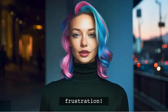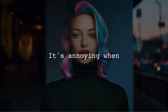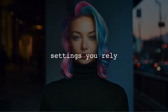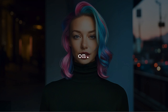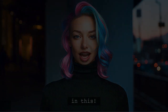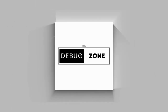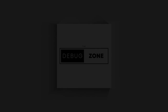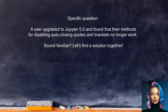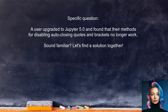I completely understand your frustration. It can be really annoying when software updates change settings that you rely on. You're not the only one dealing with this issue — it's a common concern among Jupyter users. One user recently upgraded to Jupyter 5.0 and found that their previous methods for disabling auto-closing quotes and brackets no longer work. They want to know how to fix this. Sound familiar? Let's find a solution together.